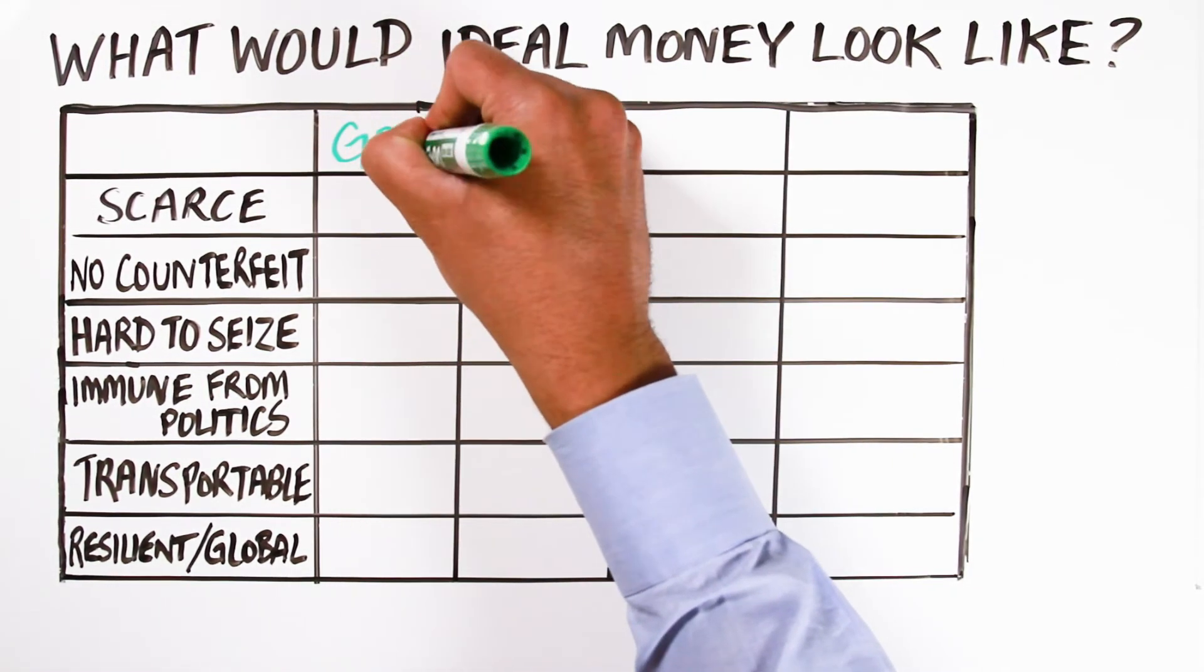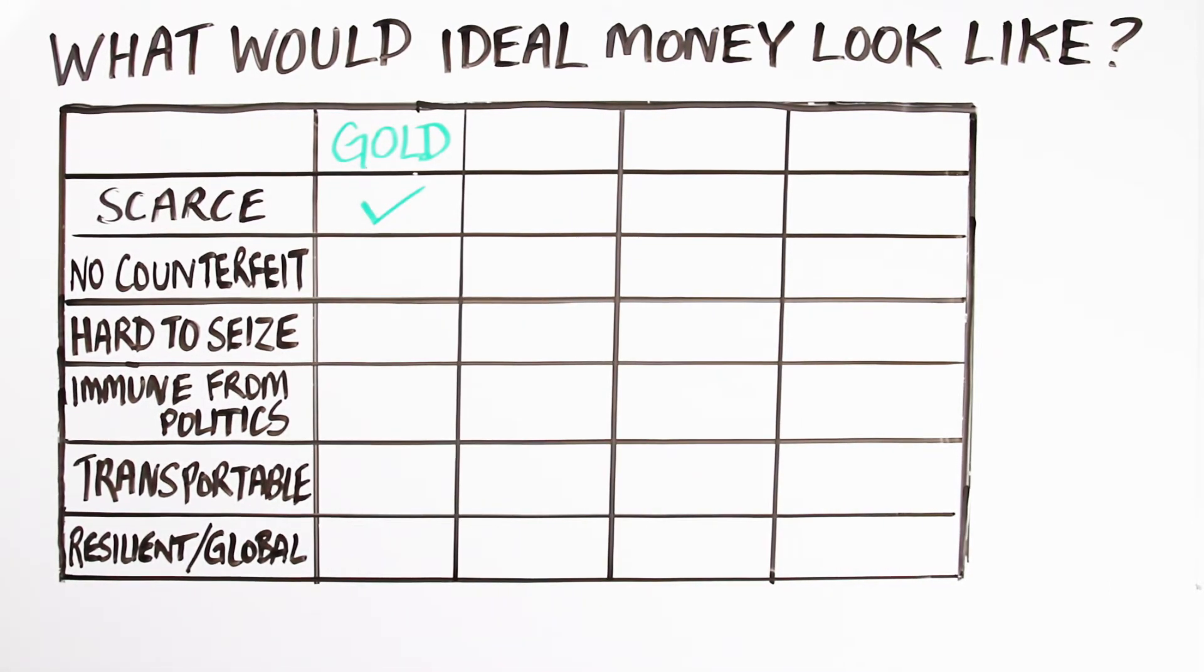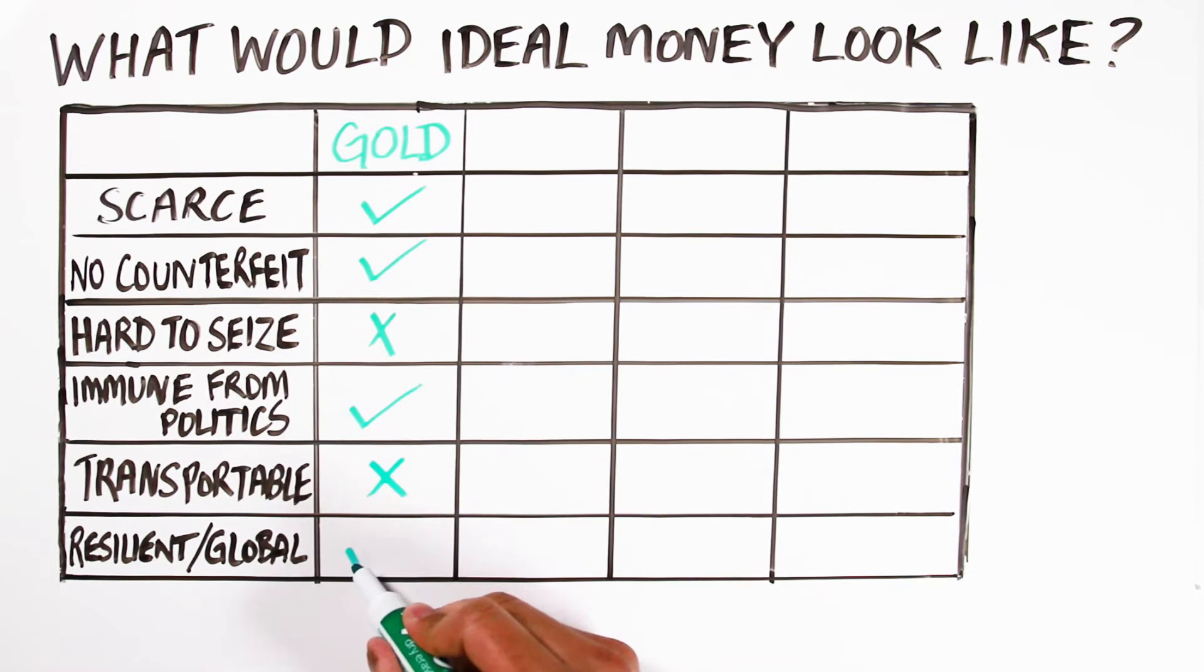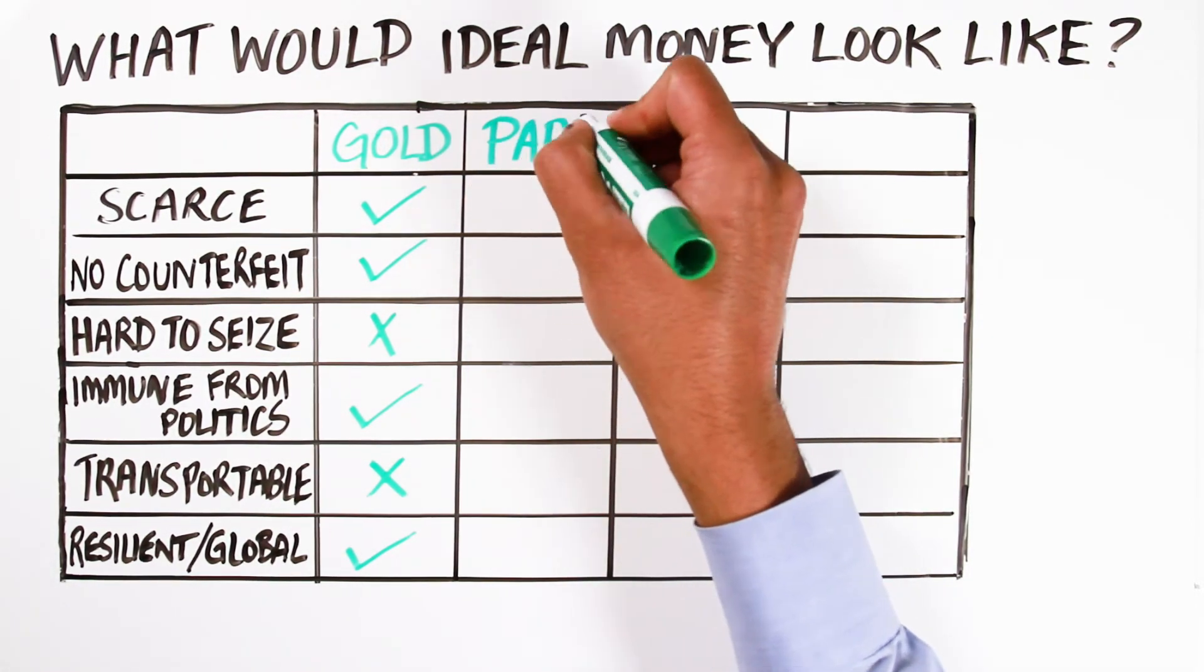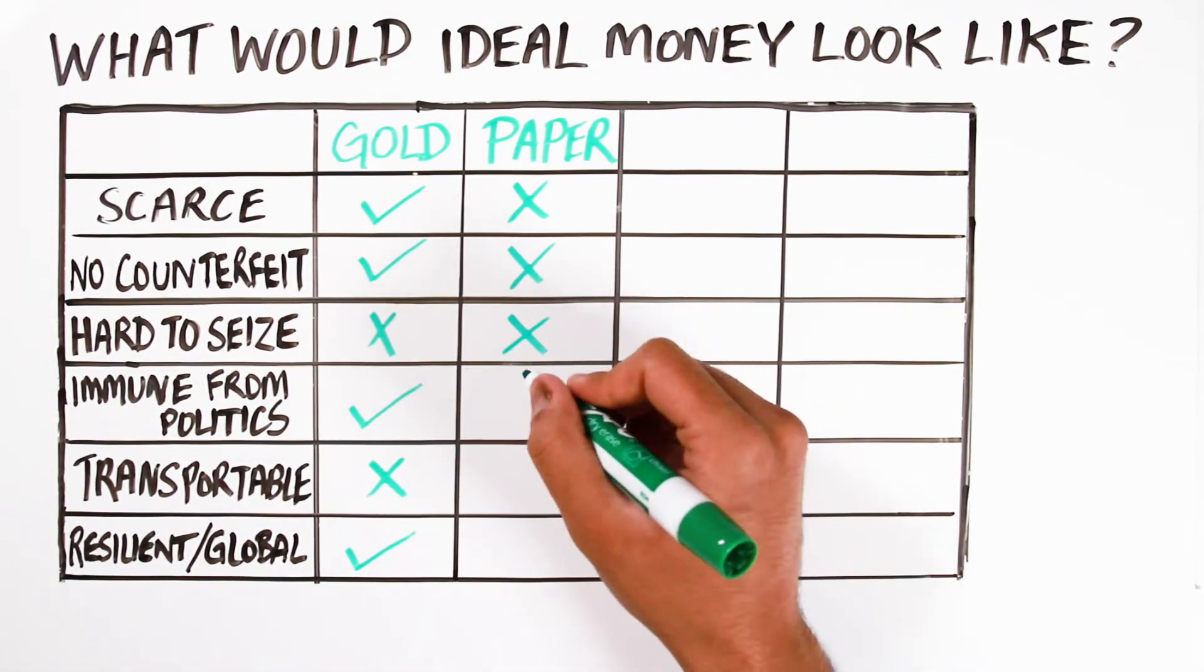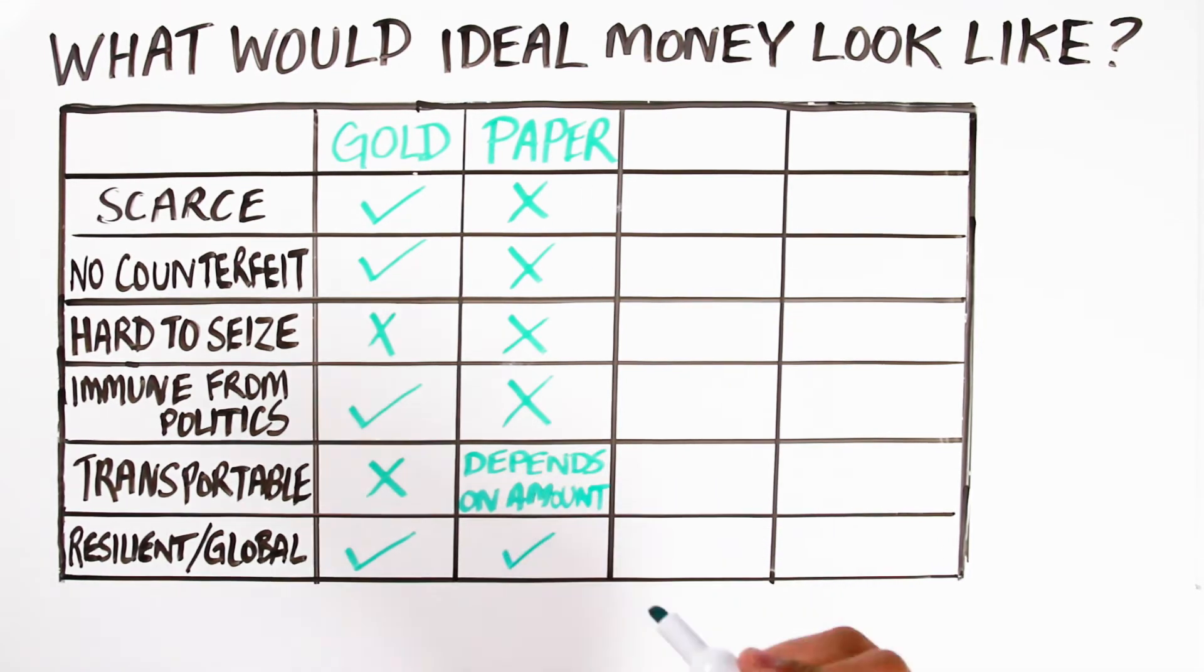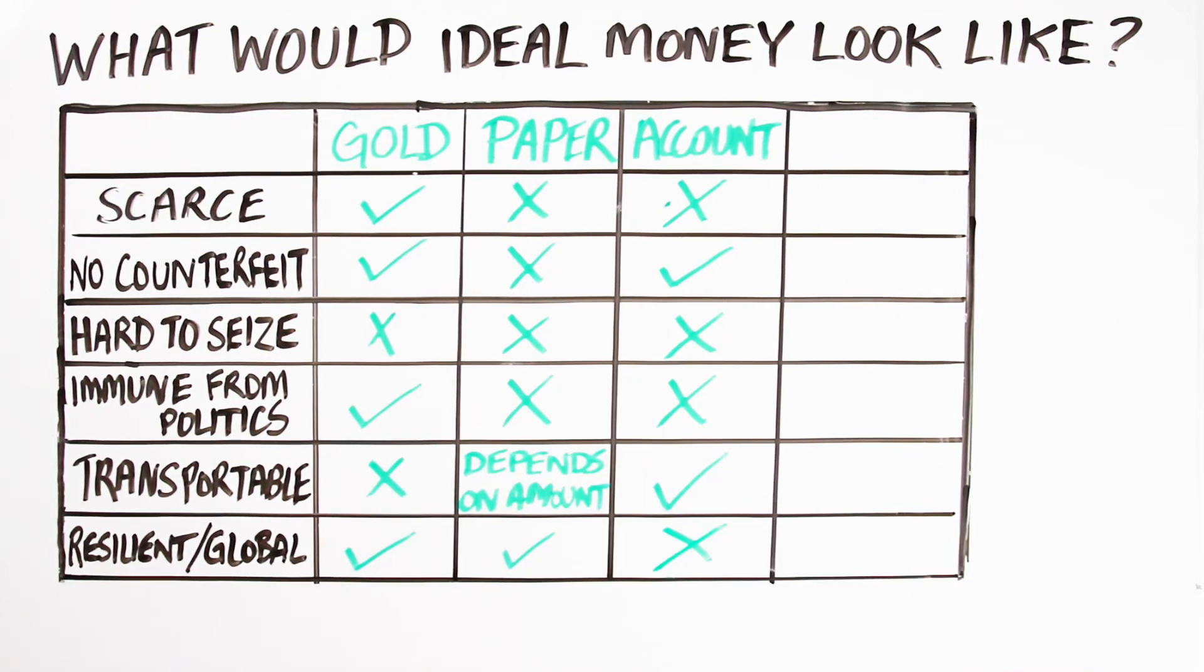Gold, for example, while it may be scarce, it's not easy to transport worldwide. The Bundesbank found this out recently when they tried to move their gold from the New York Fed back to Frankfurt. It took them months of planning and transport and millions of dollars to complete the transaction. Paper money is anything but scarce, as we found out in Argentina and Venezuela and Zimbabwe. And bank accounts, while in the developed world, you may have a bank account, but much of the world does not have bank accounts and depends on paper money. They are also not immune from censorship and seizure, as we found out in Cyprus in 2013.